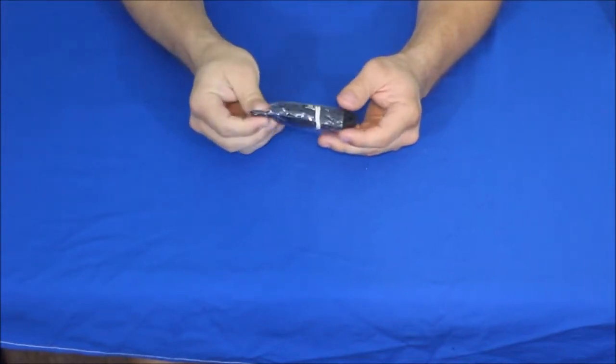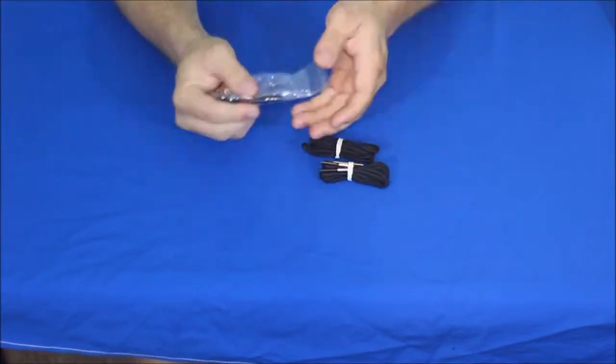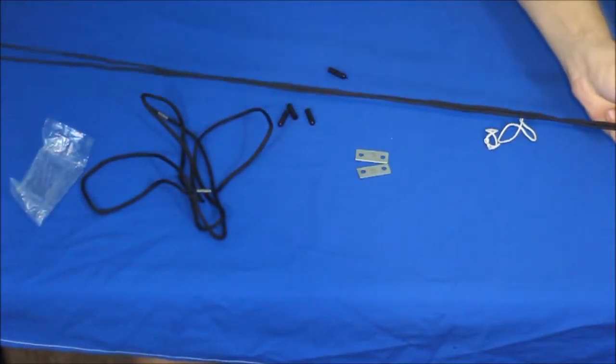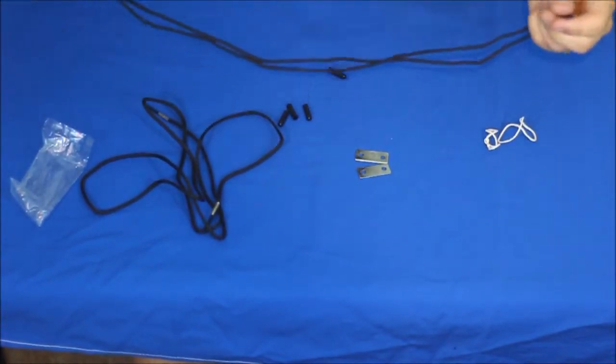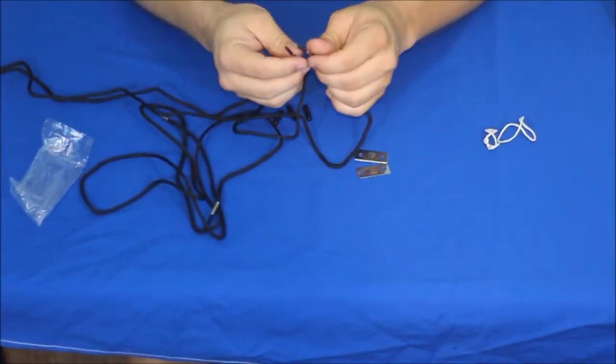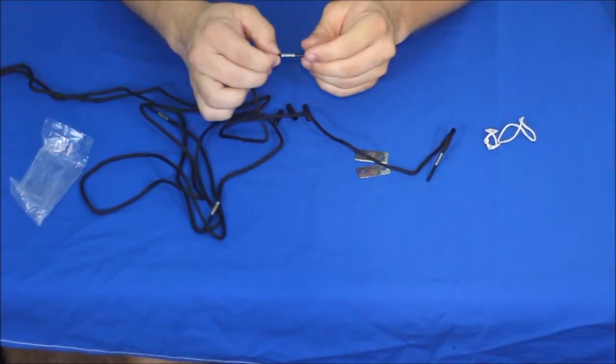They're called Life Laces and they're made of paracord. As you can see here, it's reasonably long - if you pull one completely apart, it's about five feet long. But what makes them interesting and what makes them called Life Laces is this at the end here.